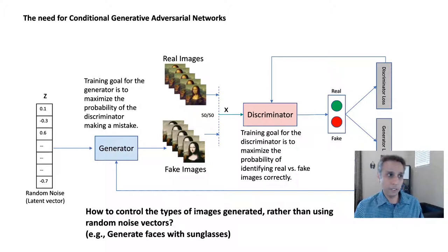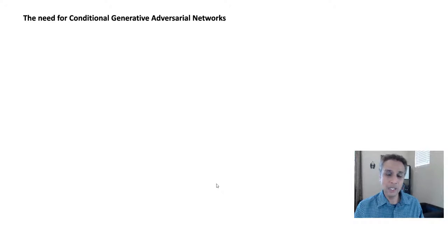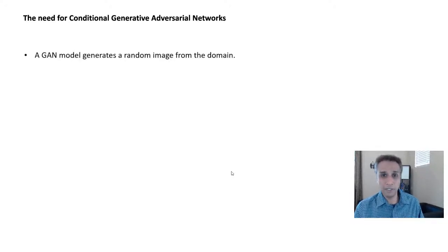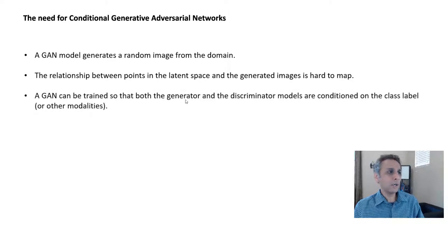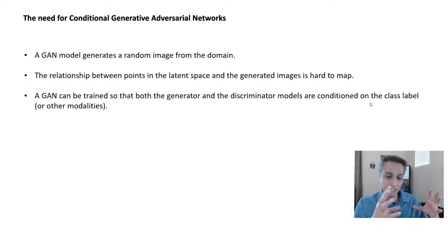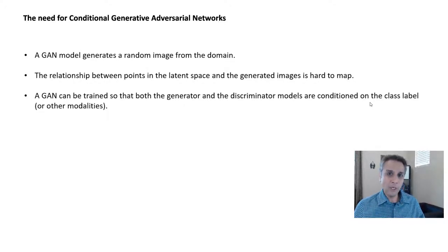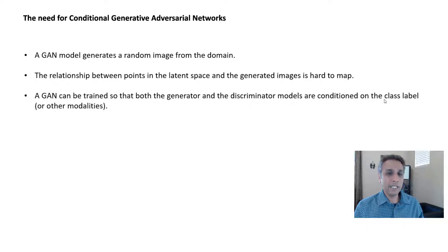The problem with a blindly trained GAN is you don't know the mapping from latent vector space to actual image attributes. This is where the conditional part comes in: conditioning your GAN using additional information — for example, class labels. A conditional GAN trains both the generator and discriminator conditioned on the class label, so when generating a digit 5 you know where that is in the latent space.